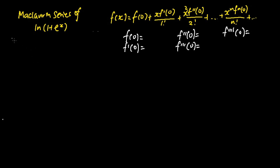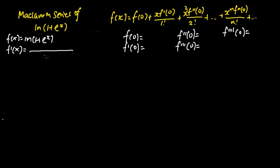I first let f(x) be equal to ln(1 + e^x). Then I will find f'(x) by differentiating f(x) once. I will get in my denominator 1 + e^x, and then in my numerator I will differentiate 1 + e^x to get e^x.